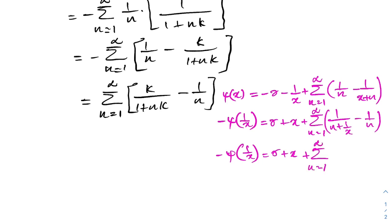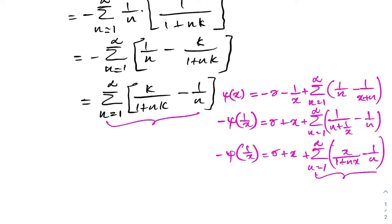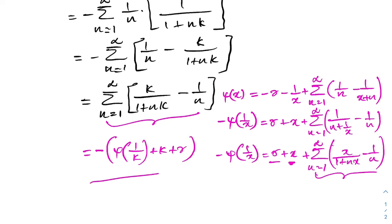So minus digamma of (1/x) equals gamma plus x plus the infinite sum from n equals 1 to infinity, taking the common denominator. This matches our series. Replacing x with k, we get minus digamma of (1/k) equals gamma plus k. Taking the minus sign as a common factor gives us minus digamma of (1/k) plus k plus gamma, which is our answer. If you like this type of video, please subscribe to this channel. Thank you for watching.